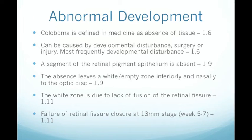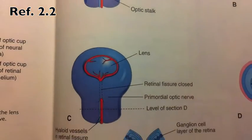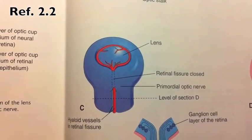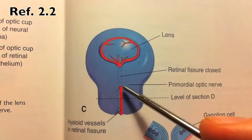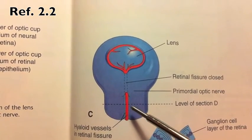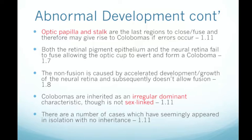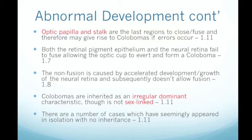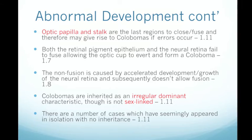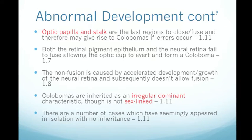In normal development, the retinal fissure closed entirely. During abnormal closure — coloboma — the issue is generally at the posterior part of the fissure, known as the optic papilla or stalk. This is the most common place for non-closure to occur. The optic papilla and stalk are the last regions of the retinal fissure to fuse, so if closure fails, it will be at this site. Both the retinal pigment epithelium and the neural retina fail to fuse, allowing the optic cup to avert and a coloboma to form.